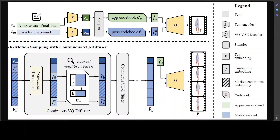To model complicated human motions, a new continuous VQ Diffuser is proposed to sample a sequence of meaningful pose representations. The architecture of the continuous VQ Diffuser is transformer-based. The key difference from the previous approach is that the continuous VQ Diffuser directly predicts continuous pose embeddings rather than their indexes in the codebook. After predicting continuous pose embeddings, it retrieves the nearest embedding from the codebook.